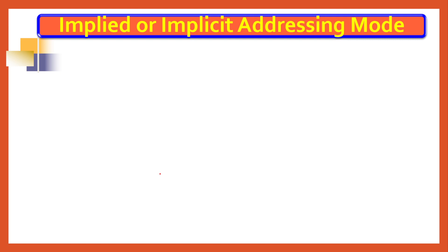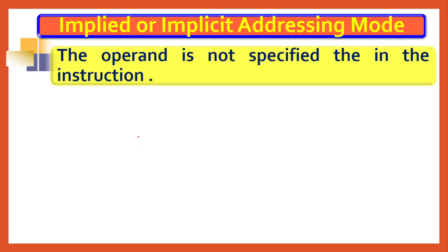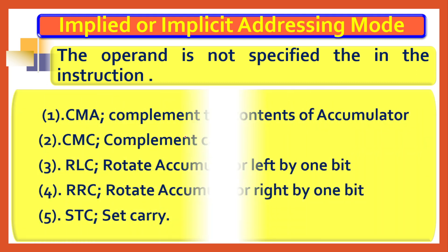Finally, implied or implicit addressing mode: it is a very simple addressing mode where the operand is not specified at all. The operand is implicitly either the accumulator or the carry flag — only these two are supported. For example, CMA (complement accumulator) takes the accumulator content and complements it. CMC means complement carry. RLC means rotate accumulator left. In all these instructions, the operand is implied.